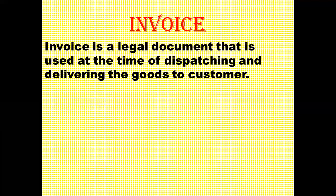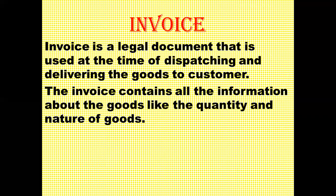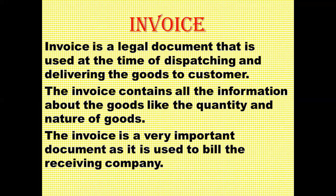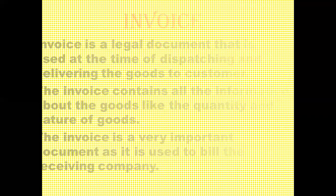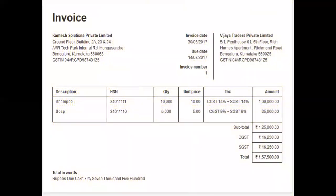The next document is the invoice. An invoice is a legal document used at the time of dispatching and delivering goods to the customer. It contains all information about the goods — the quantity and nature of goods. The invoice is a very important document as it is used to bill the receiving company. It includes the buyer's and seller's information, description of products, applicable taxes, and the actual amount.